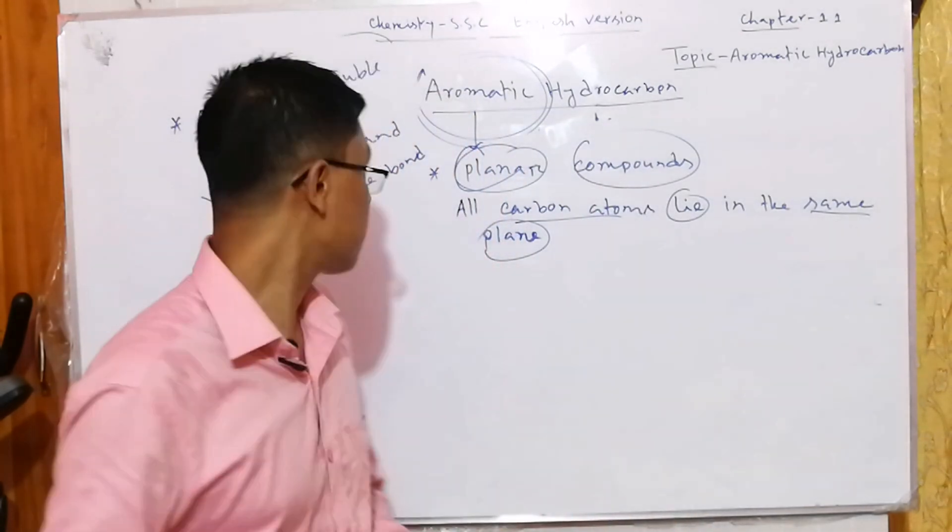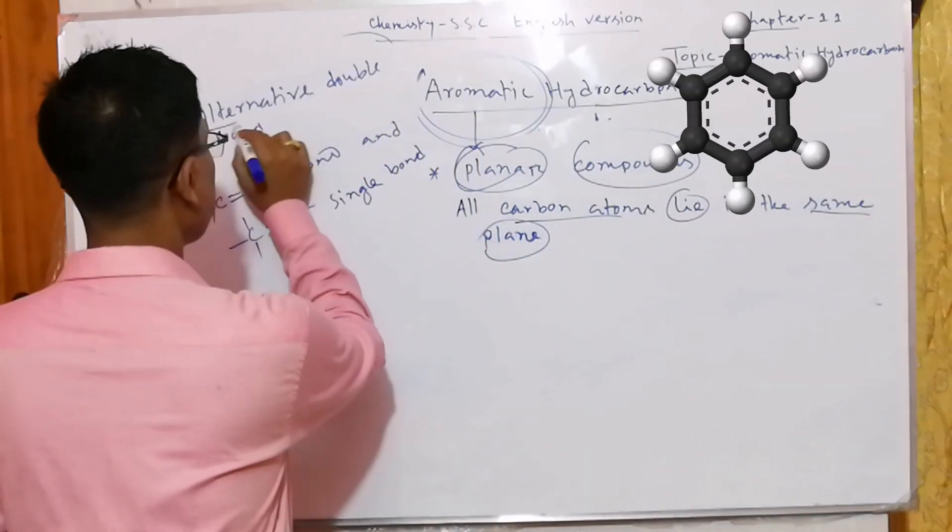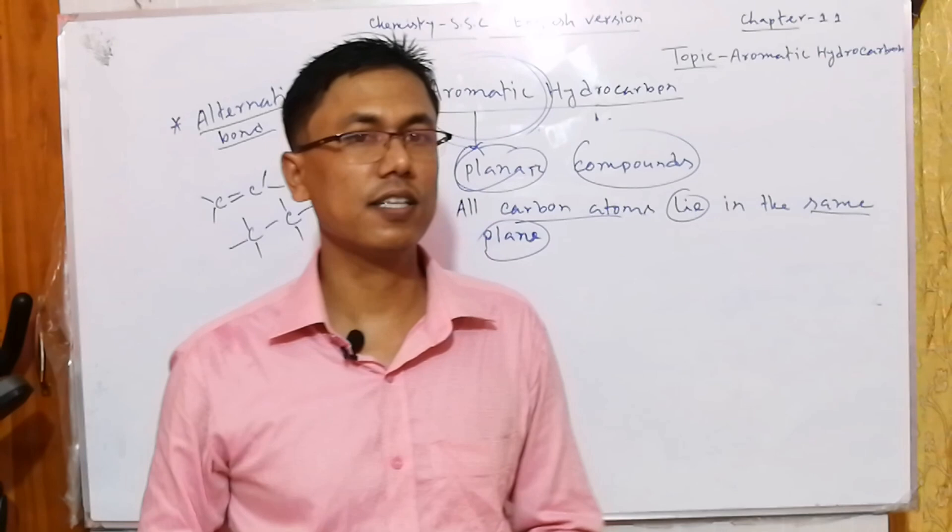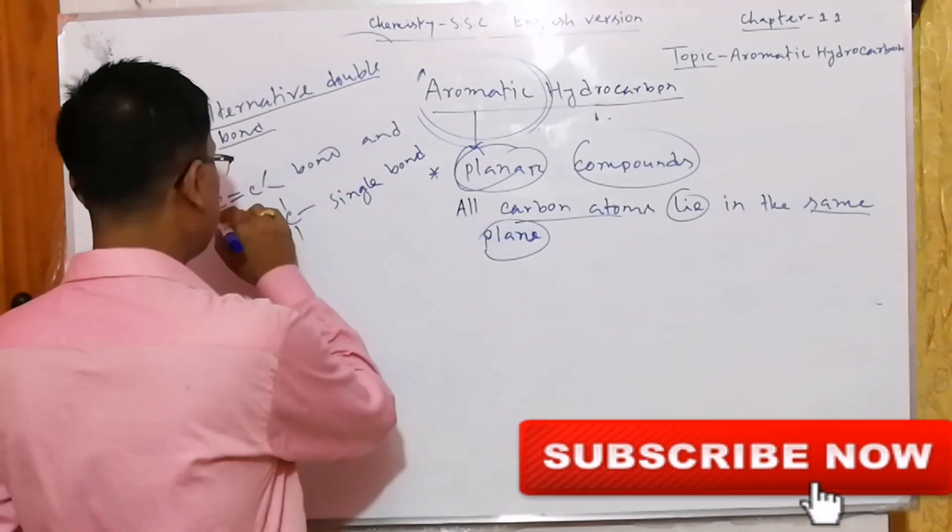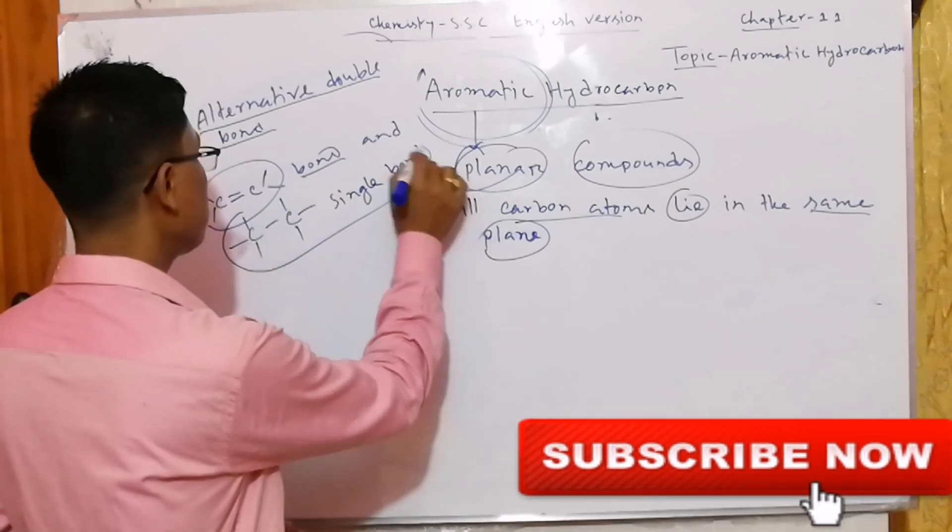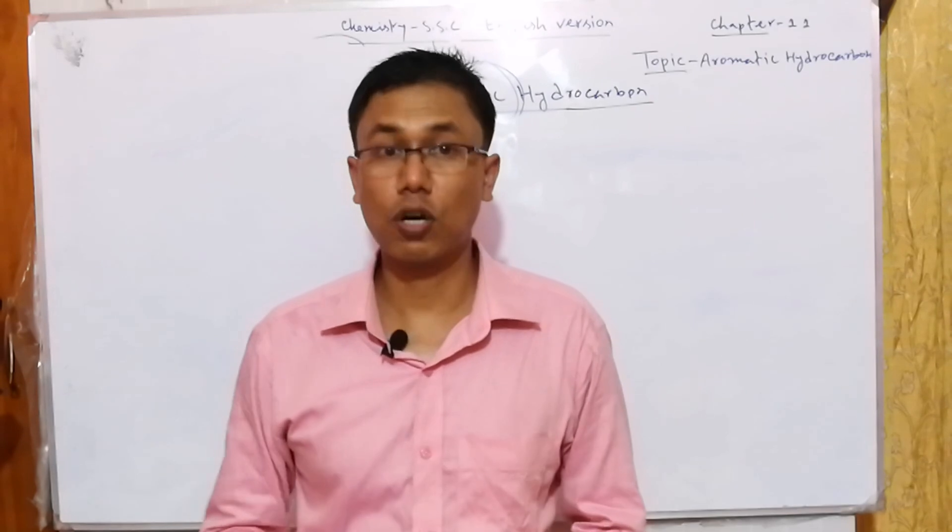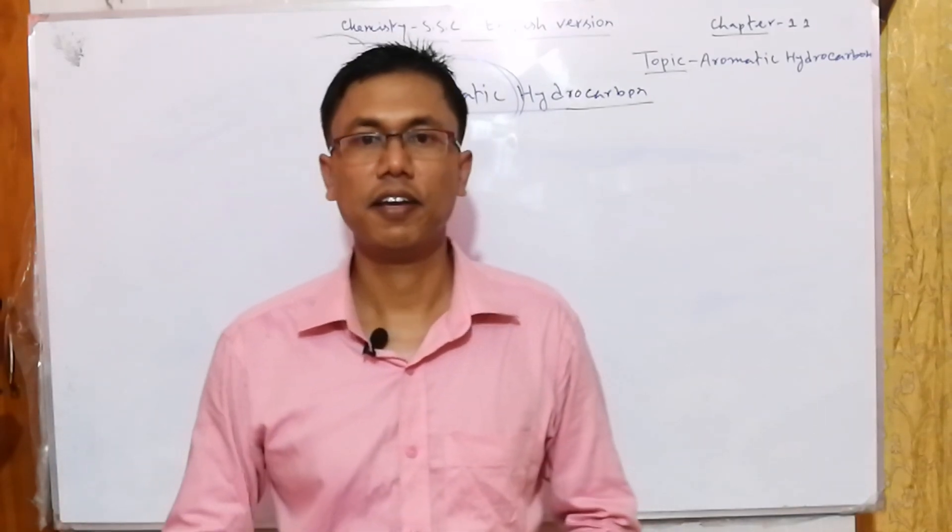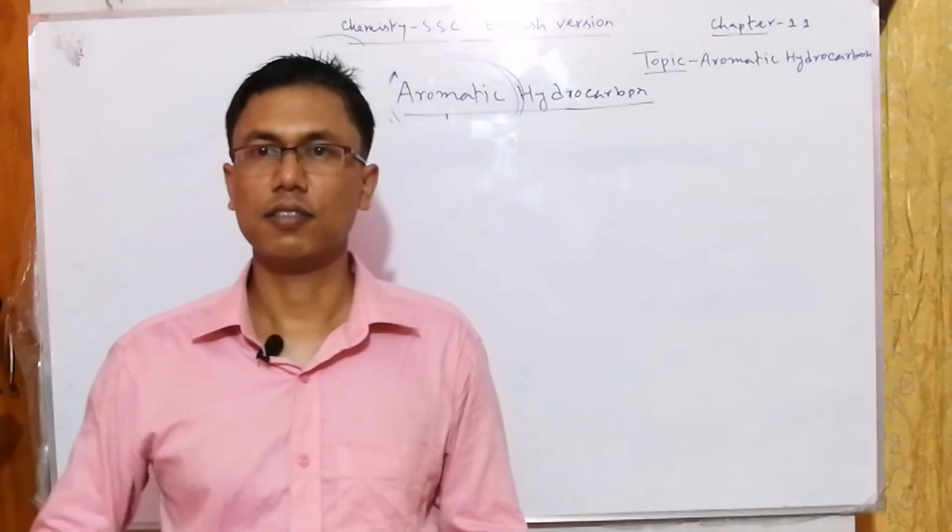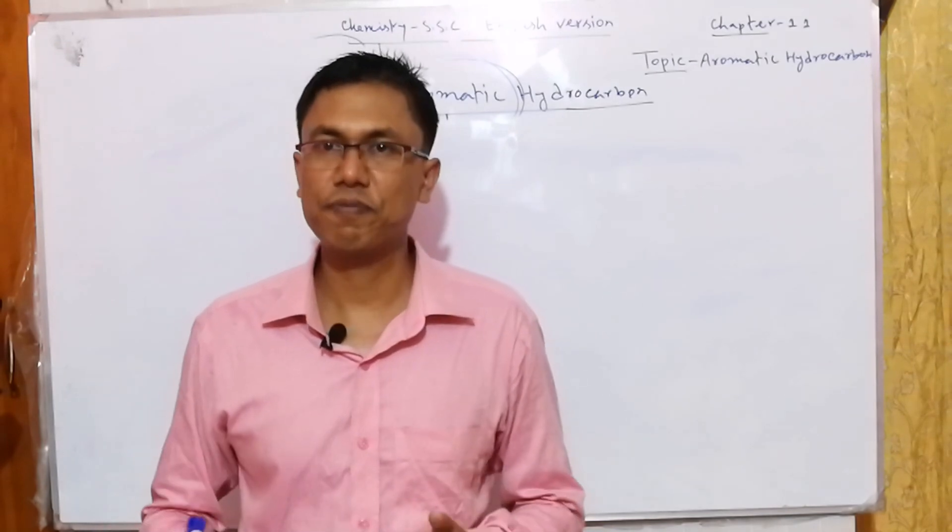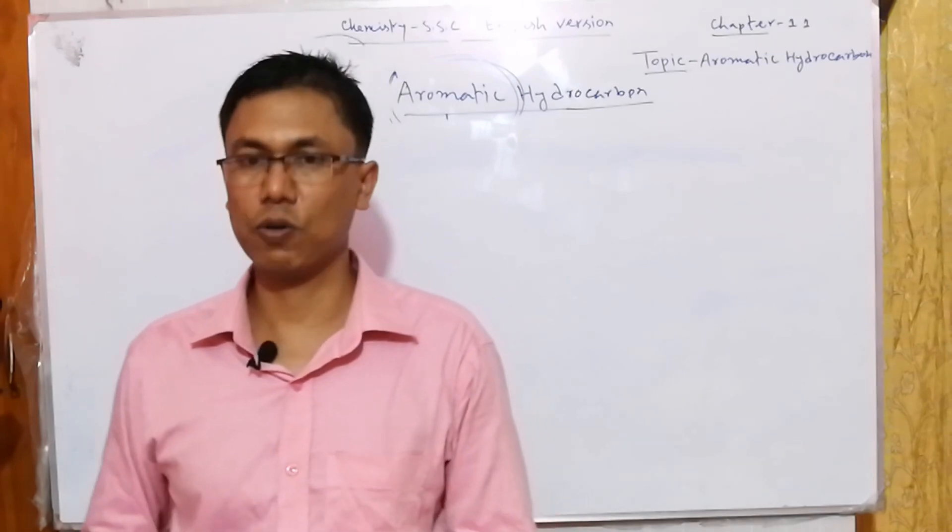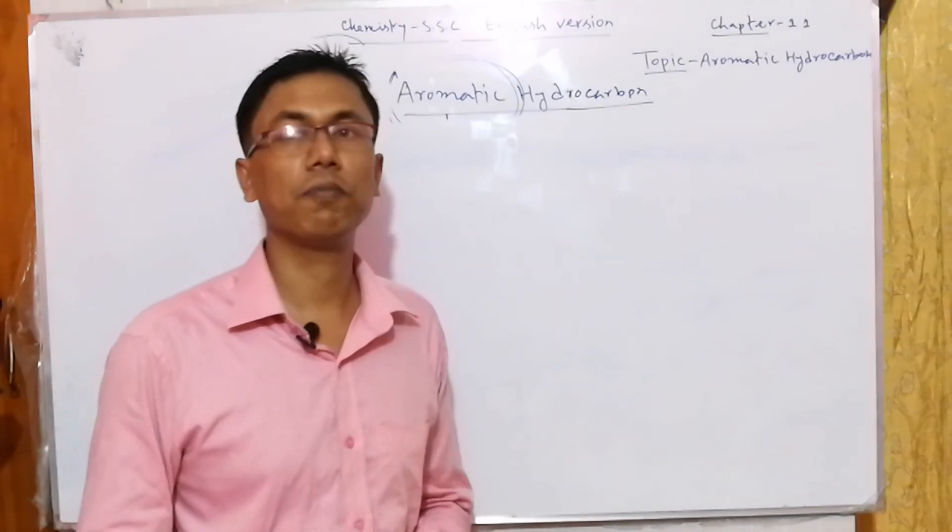The last one is that it must have alternative double bonds. What do you mean by alternative double bond? Very easy to say, there is a carbon-carbon double bond and also then a carbon-carbon single bond. With all of these characteristics of aromatic hydrocarbons, we can define it. The aromatic hydrocarbons are those hydrocarbons which are generally 5, 6, or 7-membered co-planar or cyclic compounds and also have alternative double bonds.